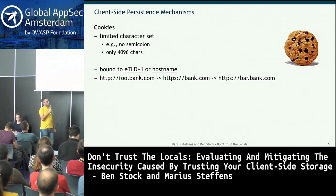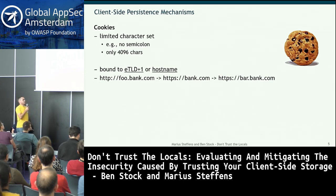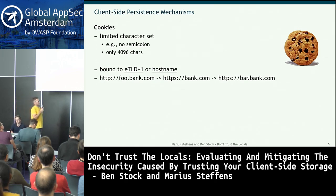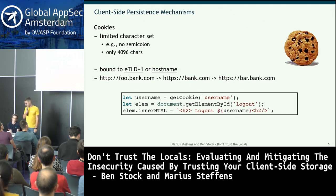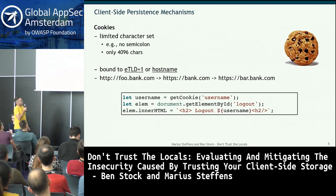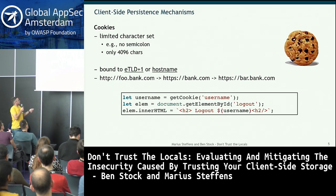So foo.bank.com running over HTTP can set a cookie for its parent domain bank.com, which will also be sent to bar.bank.com. An example of how this goes wrong: a username retrieved from the cookie is placed into getElementById('logout'). If an attacker has compromised this cookie, we have an attacker-controllable string inserted into the page — obvious XSS.